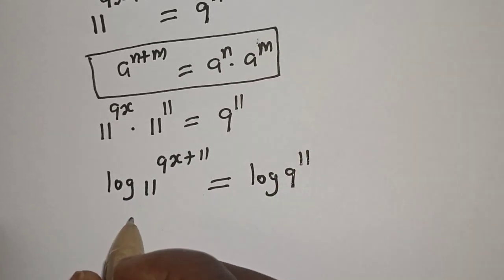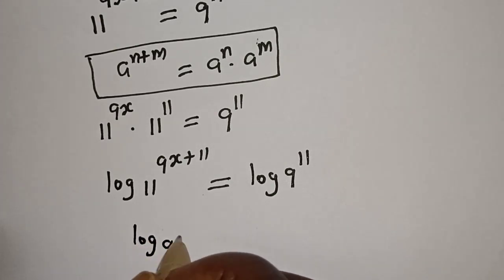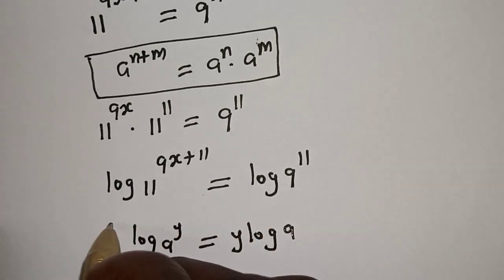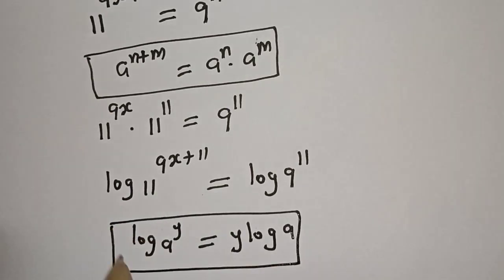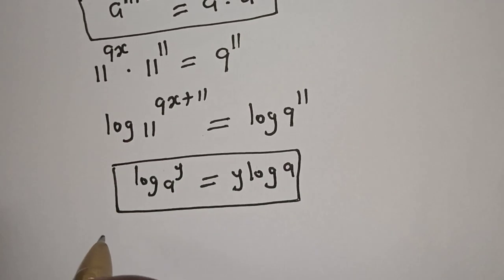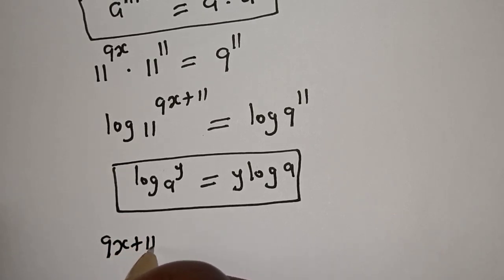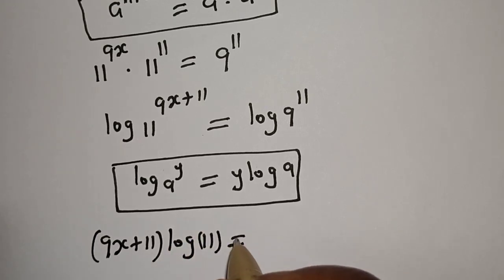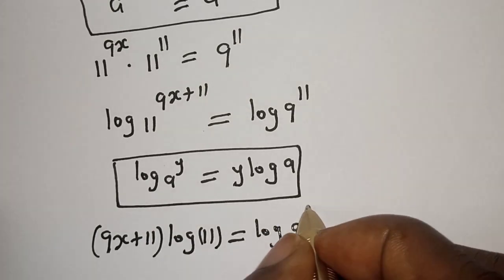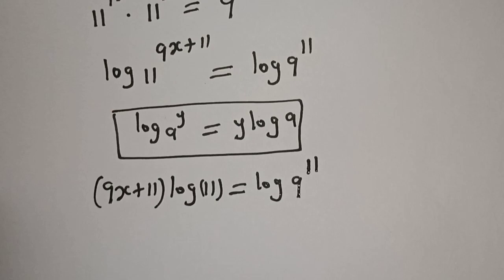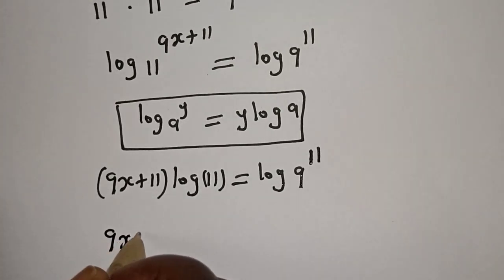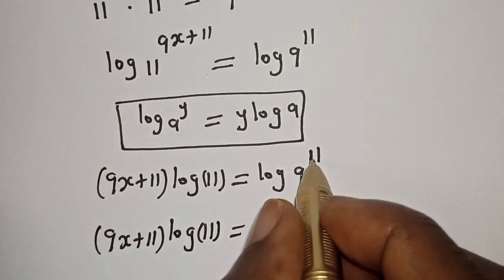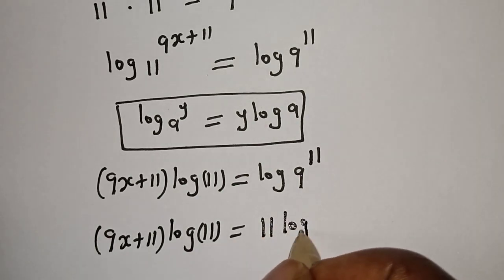If you have log of a raised to power y, this is equal to y times log a. Applying this rule, 9s plus 11 times log 11 is equal to log of 9 raised to power 11, which simplifies to 11 log 9.